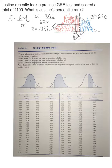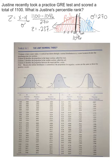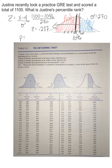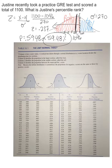For percentile rank, we want to find what percentage of people she beat — that's on the left-hand side, where scores are below the mean, like 1,000, 950, and 900. She scored 1,100, above the mean of 1,046, so she should beat more than 50%. Looking at the body proportion of 0.5948, she beat 59.48% — so she's in the 59th percentile.